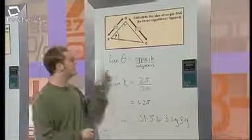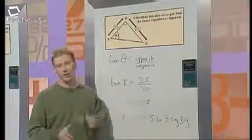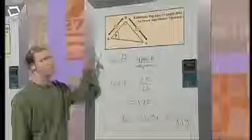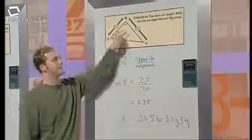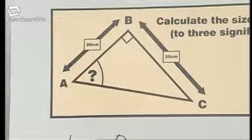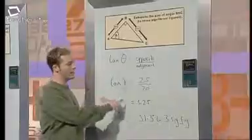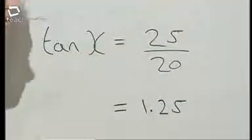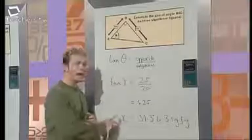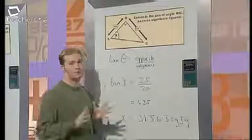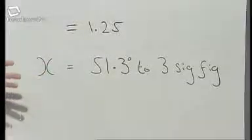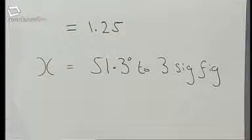The ratio to use is tan theta equals opposite over adjacent. Then substitute the information we already have. I've decided to call my angle X. The opposite BC is 25 and the adjacent is 20. So tan X equals 25 divided by 20, which is 1.25. Now to find the angle X, I use the inverse tan function on my calculator. So the angle is 51.3 degrees to three significant figures.